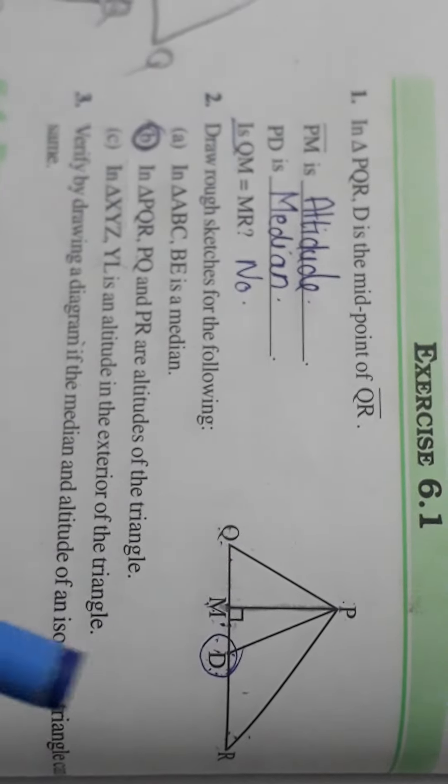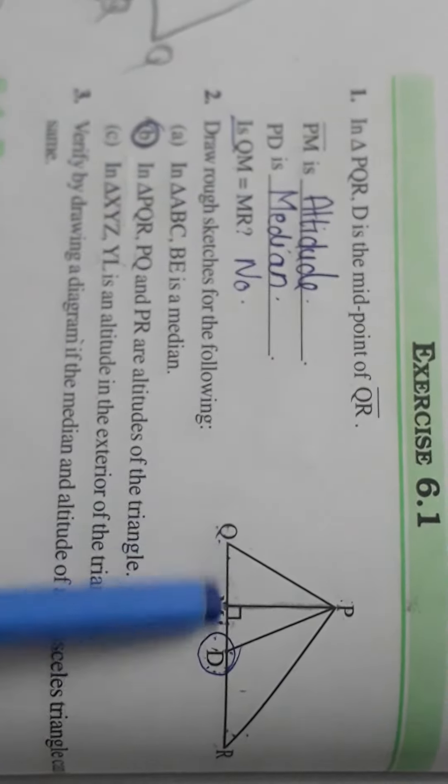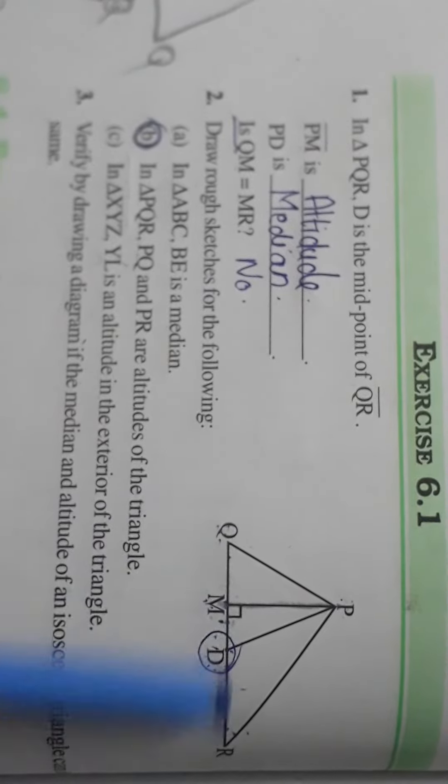Next, PD. What is PD? It is the median because it is coming at the midpoint of QR line.